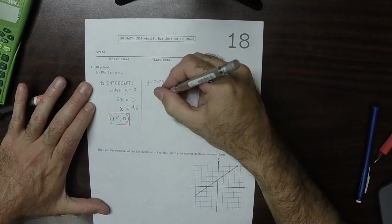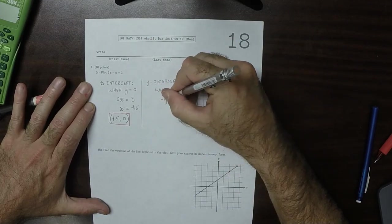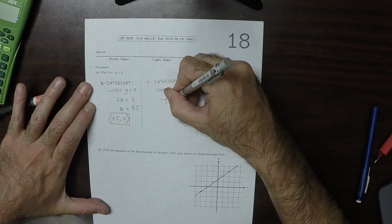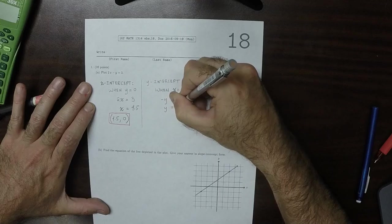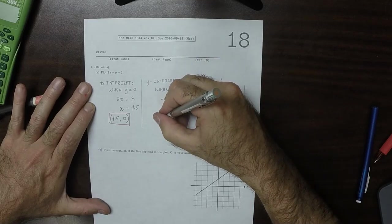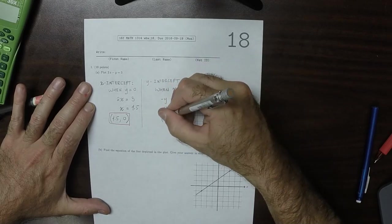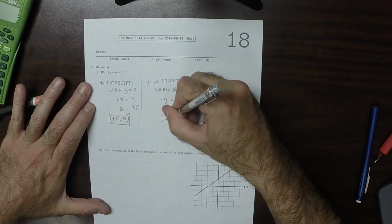So we'll take that equation and plug in x is 0. So the equation becomes negative y is 3. So y is negative 3. So the point is 0, negative 3.